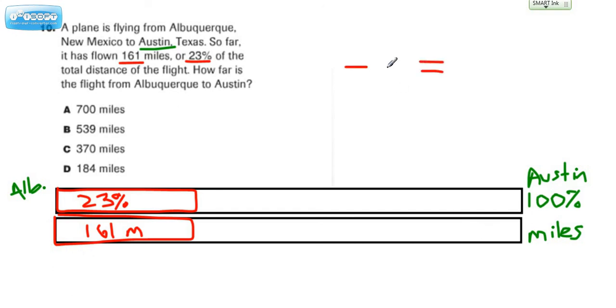One way is to think about what we know about parts and wholes. Now we've only gone a little bit of the ways. That's 23 out of 100. 23% is 23 out of 100.